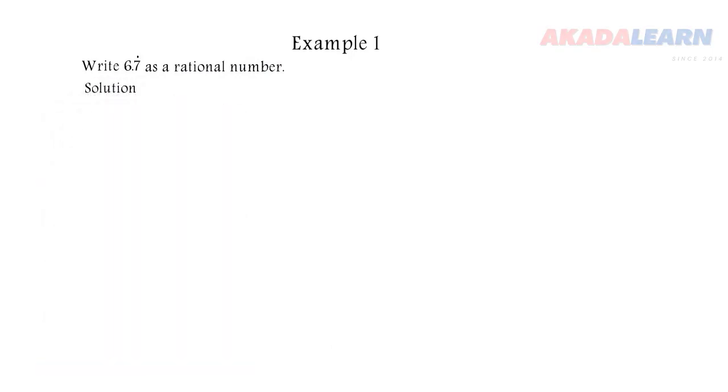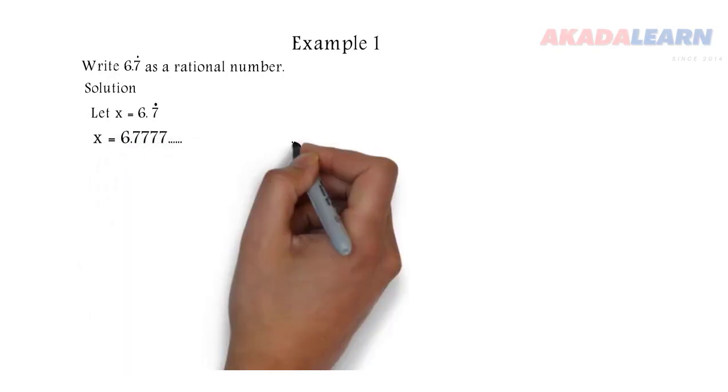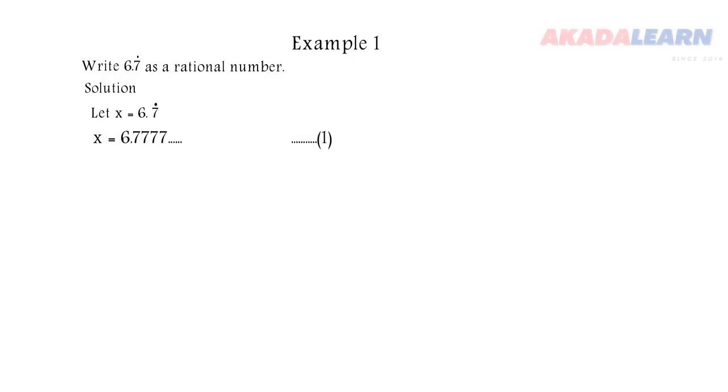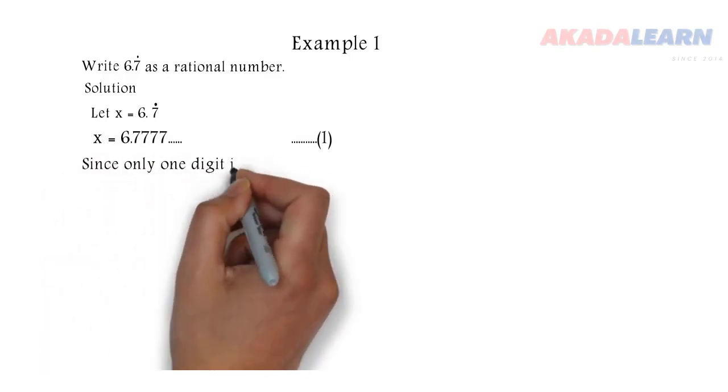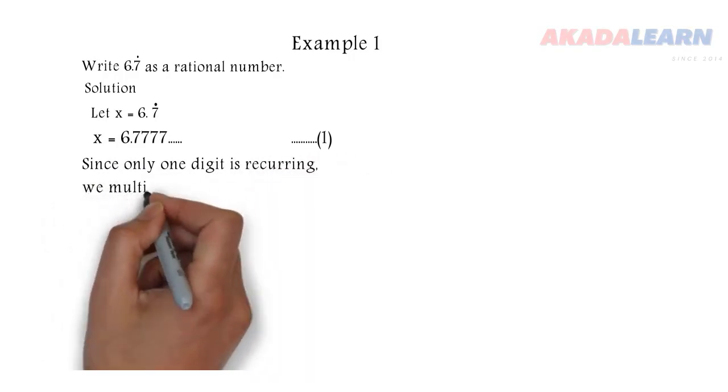So the first thing we are going to do, we are going to represent that number with a variable. So let x be 6.7 with a dot on the 7. So it means x is 6.77777 like that continually. So let's call that equation 1. Now since 7 is just a digit that is repeated, we are going to multiply equation 1 by 10.